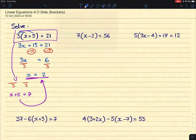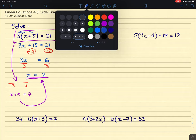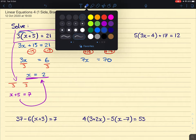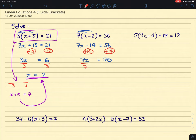So that's exactly what I'm going to do in the second one. 7 times x and 7 times minus 2, which will give us 7x, and then minus 14 equals 56. Then we're going to add 14 to both sides and then divide by 7. We're going to get 7x equals 70. And then divide both sides by 7, and we end up with x equals 10.